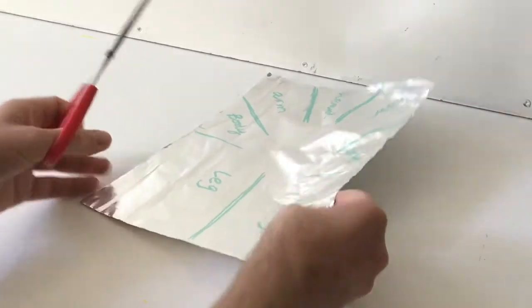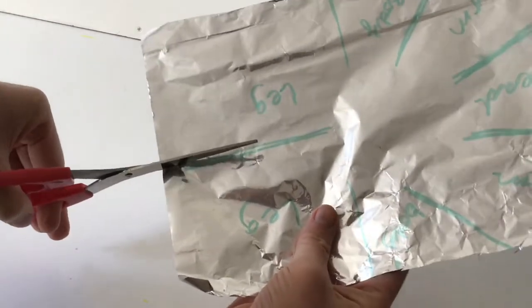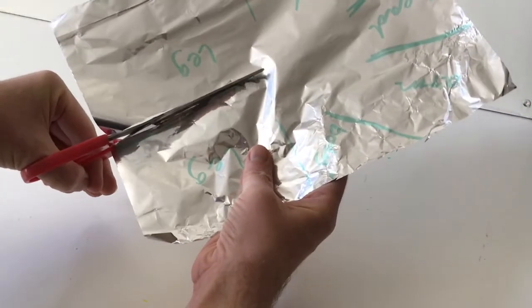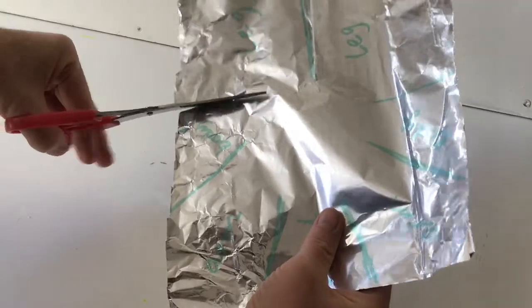So once you've got that all drawn, you're going to cut into your tin foil. And cutting into your tin foil is actually a really good way as well to sharpen up your scissors, so you should have nice sharp scissors at the end of this.